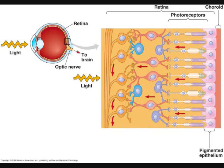The photoreceptors are the cells that respond to light, located in the outermost region of the neural layer of the retina. The vertebrate eye has two types of photoreceptors: rods and cones. In the resting state, photoreceptors constantly release the neurotransmitter glutamate. Upon absorbing a photon, a complex series of reactions occurs which leads to the photoreceptor's cessation of glutamate release. Thus, photoreceptors indicate reception of a photon by temporarily not releasing neurotransmitter — the opposite of what one might expect.